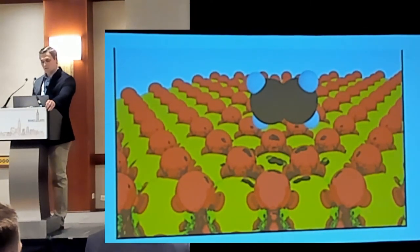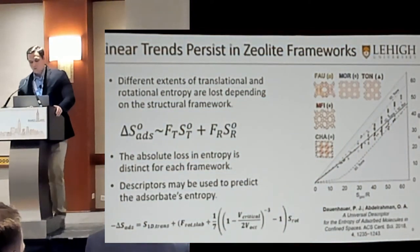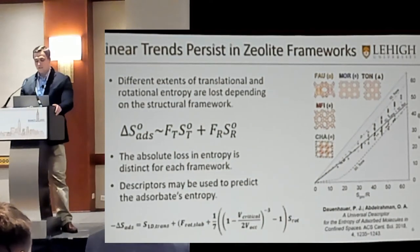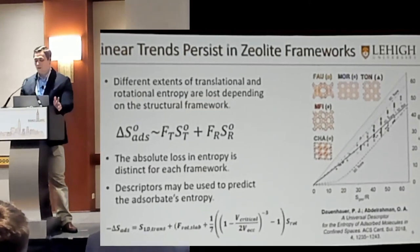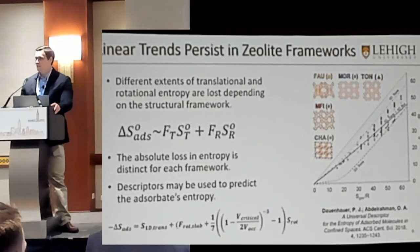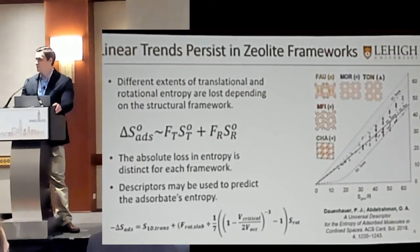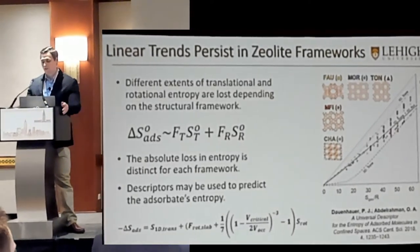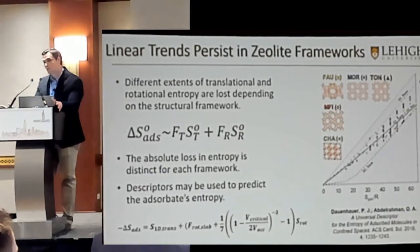This idea was later expanded to zeolites by Paul Dunghauer and Omar Adaraman. They took a series of experimentally determined adsorption entropies for various alkanes and alkenes within acidic zeolites. What they discovered is that when they plotted the adsorption entropy on the y-axis against each molecule's respective gas phase entropy — just like in the Campbell and Sellers paper — these linear correlations continued to persist.